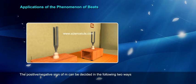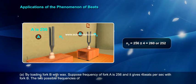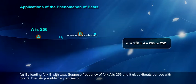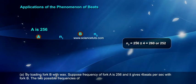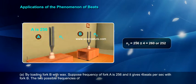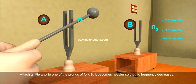Method A: By loading fork B with wax. Suppose frequency of fork A is 256 and it gives 4 beats per second with fork B. The two possible frequencies of B are 256 plus or minus 4, equals 260 or 252. Attach a little wax to one of the prongs of fork B.